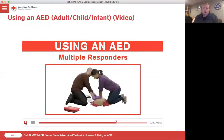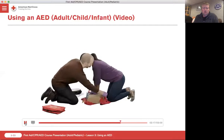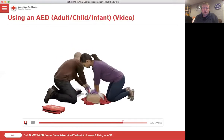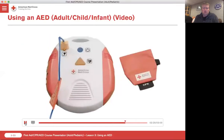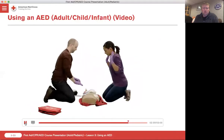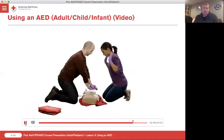If there are two or more responders, the steps will be slightly different. Responder 1 will continue CPR while Responder 2 sets up the AED. When the AED prompts analyzing heart rhythm, Responder 2 says clear. Then the responders switch roles — Responder 1 will now operate the AED and Responder 2 will now provide CPR. The responders should switch roles in this manner each time the AED analyzes the heart rhythm.